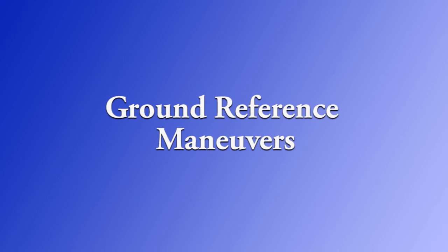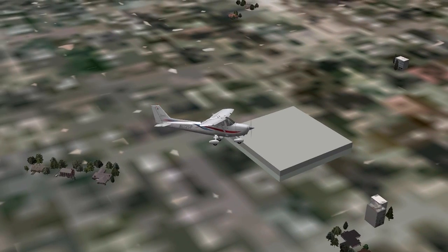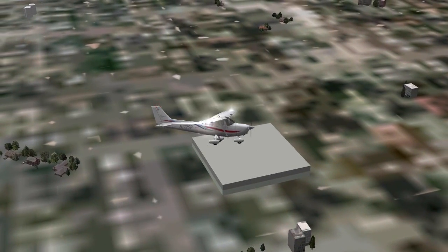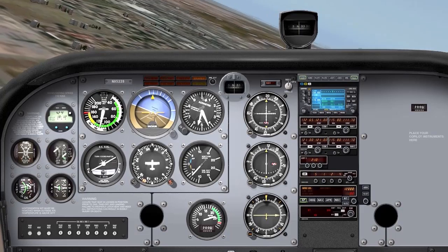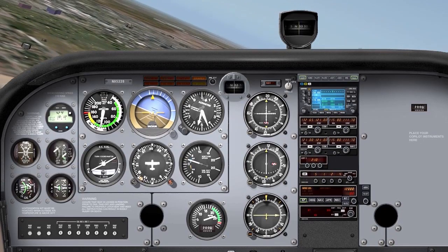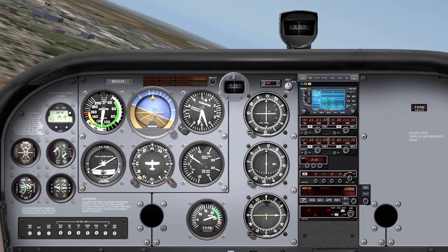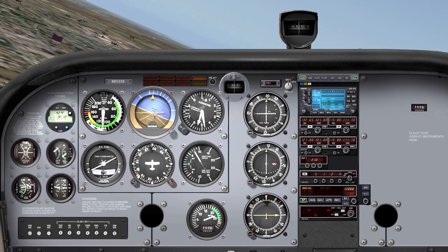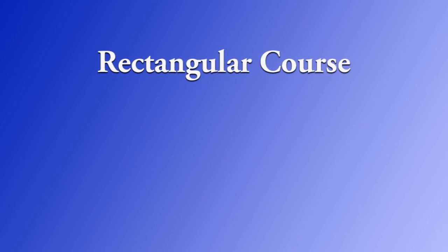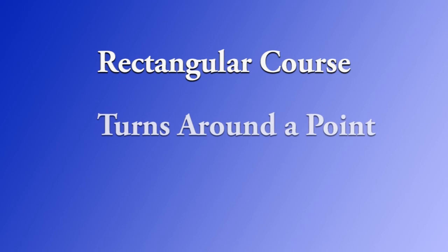Ground reference maneuvers are designed to help the pilot learn to control the airplane while splitting their attention between the outside references and the instrument panel. For your private pilot checkride, you'll have to be able to demonstrate three ground reference maneuvers: a rectangular course, turns around a point, and S-turns.